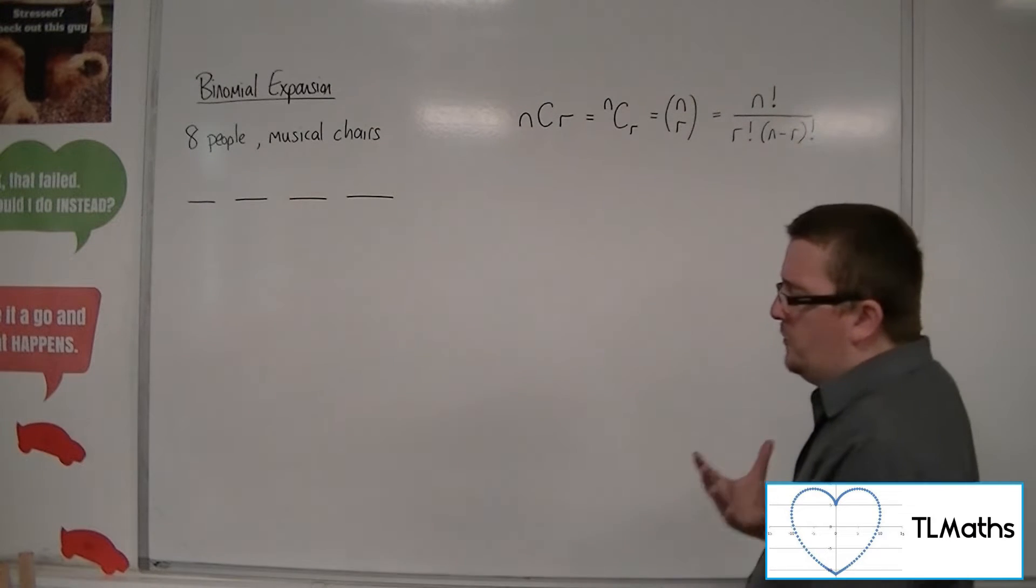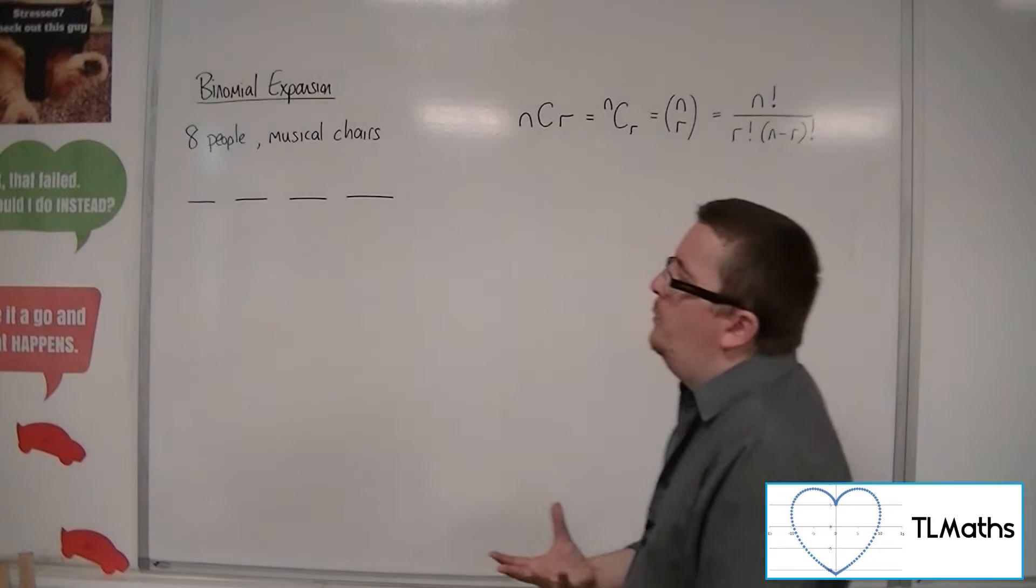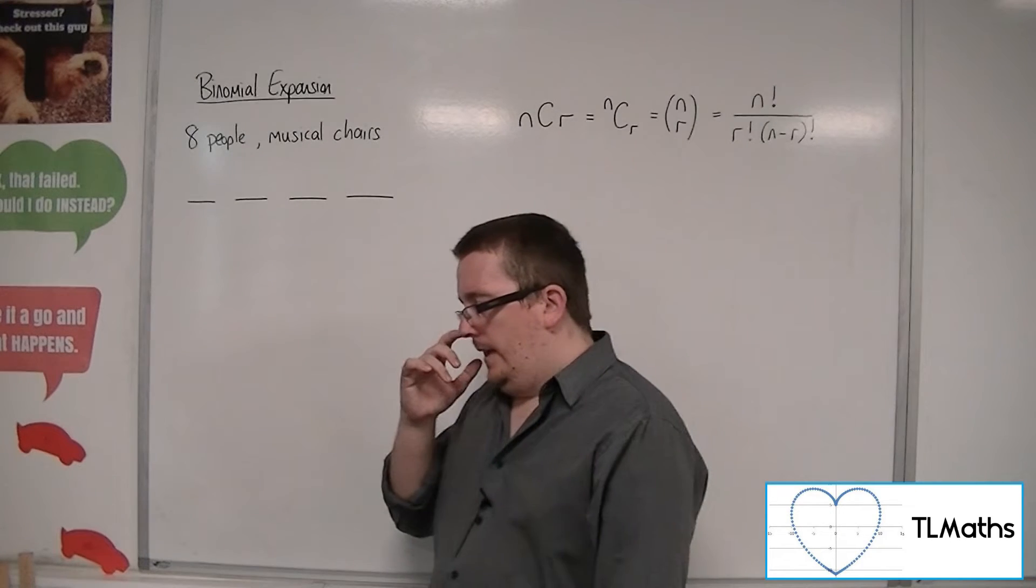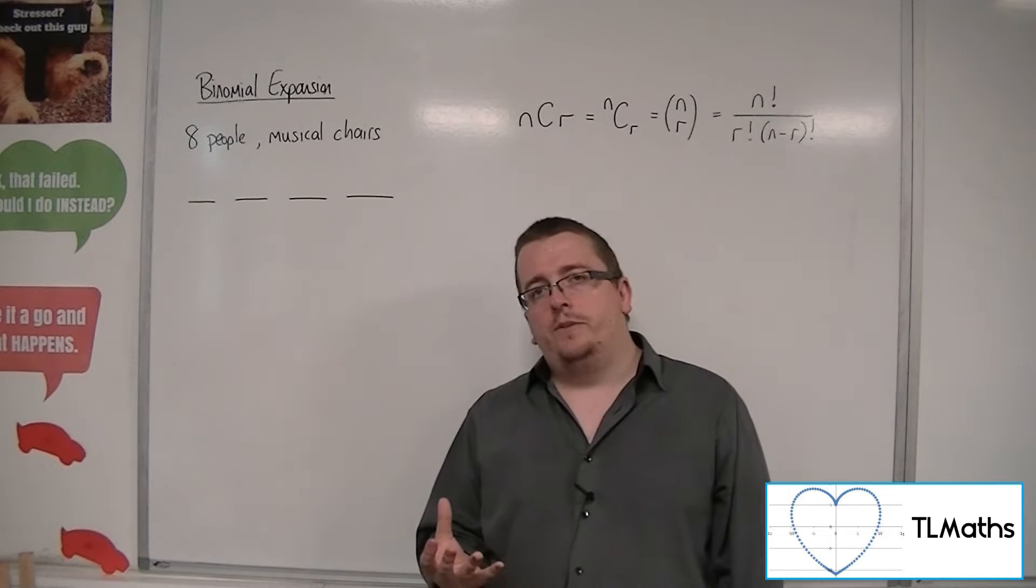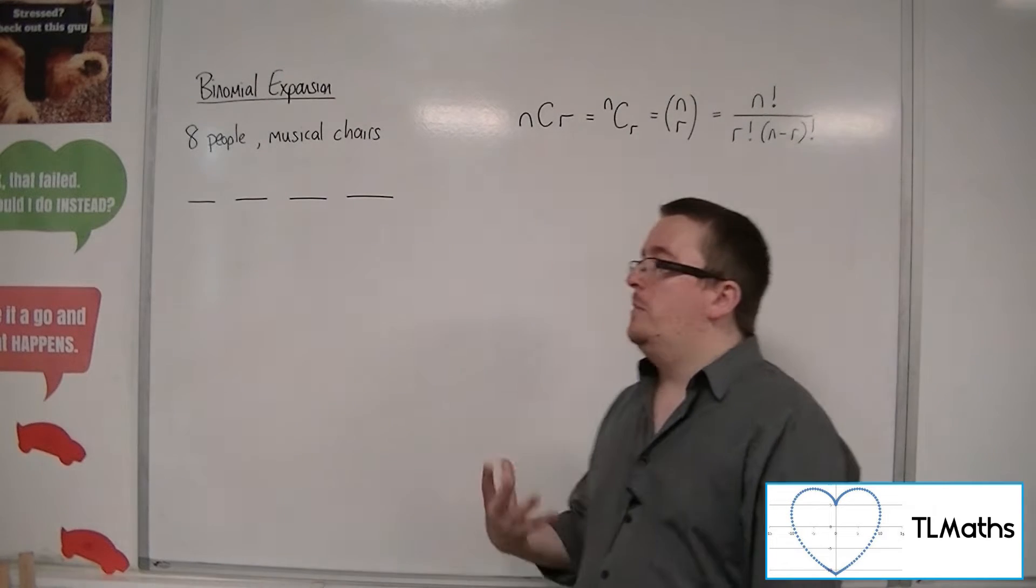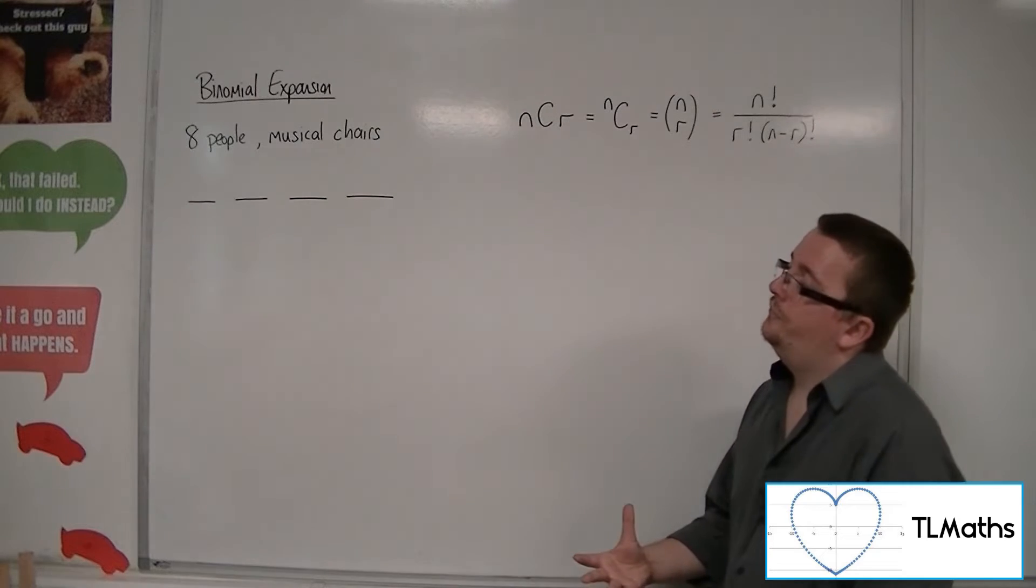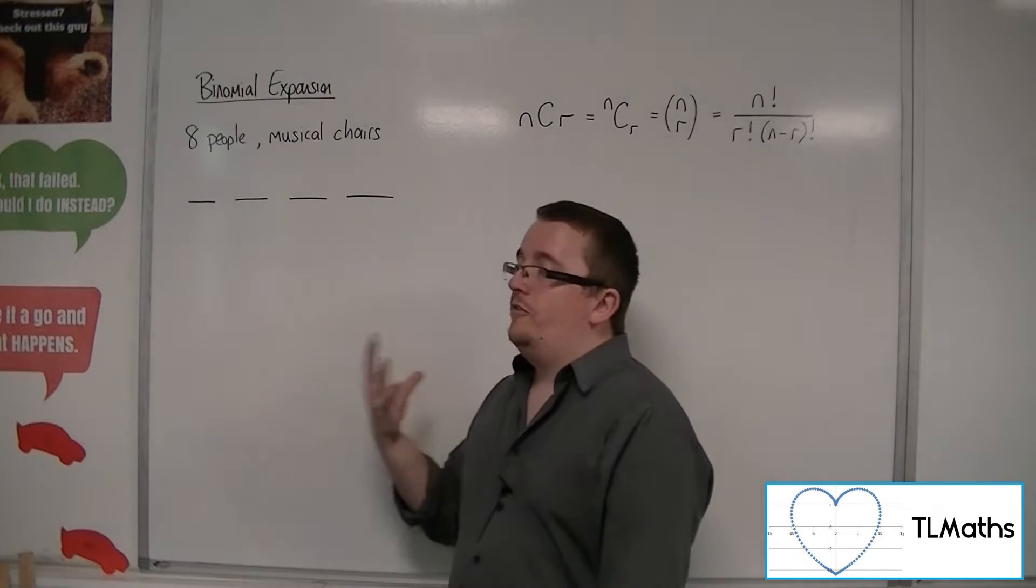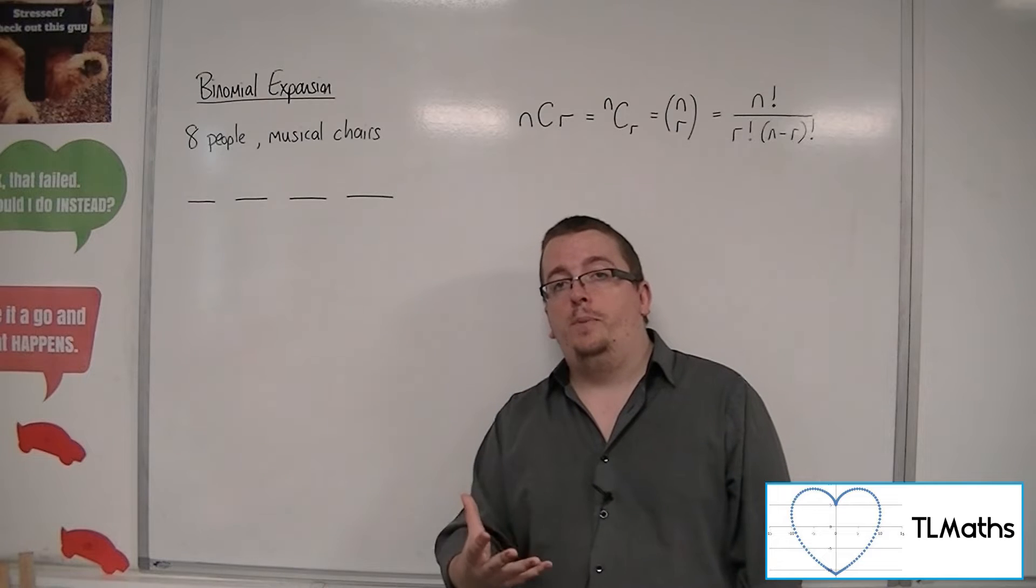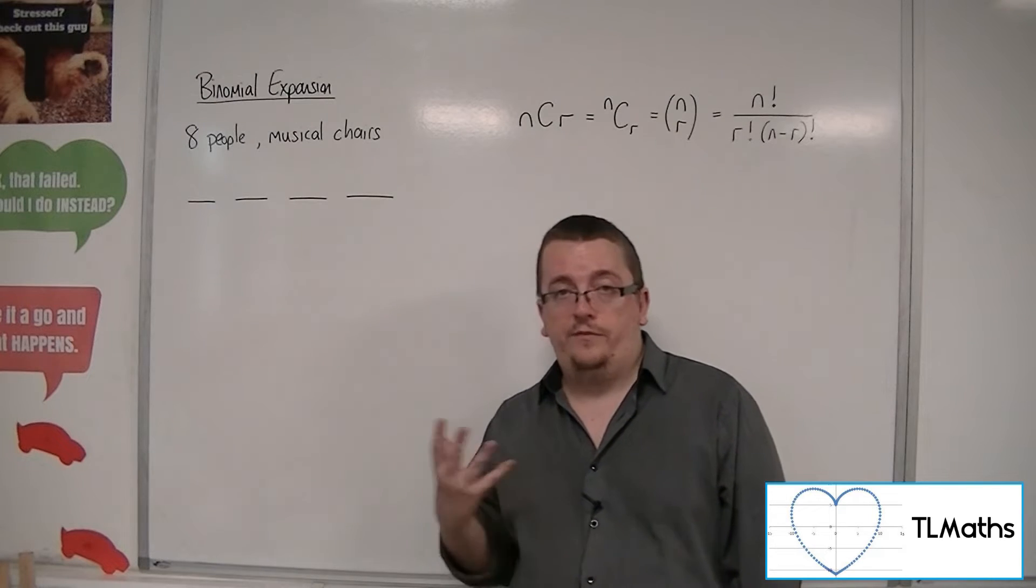Let's say we've got the situation where we've got eight people playing musical chairs. And in a single round, I'm going to remove four of the chairs, so there's only going to be four people left in the game. How many different ways can these four people sit in these chairs effectively?